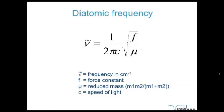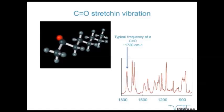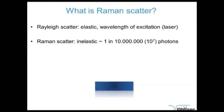For the frequency, we have an equation telling us that the frequency in wavenumbers is related to the force constant — the strength of the bond between atoms — and the reduced mass, which depends on the weight of the atoms involved. The rest is constant. So the vibrational spectrum shows the ratio of force constant to reduced mass. For a typical C=O stretching vibration, this gives a frequency of about 1720 wavenumbers, visible as a peak in the Raman spectrum.